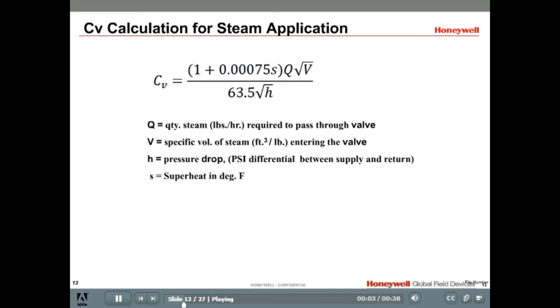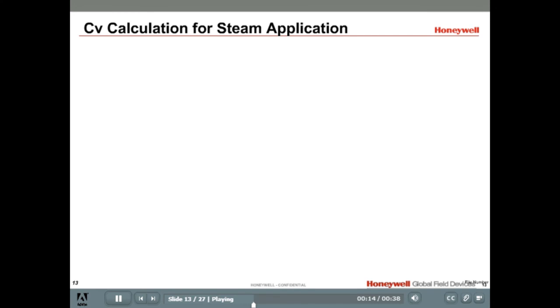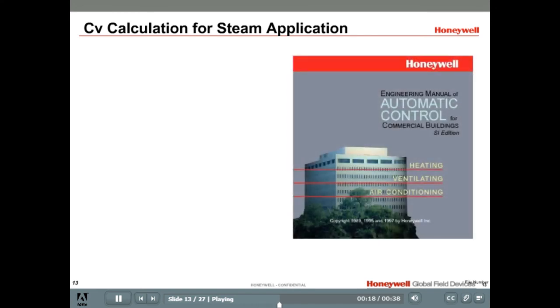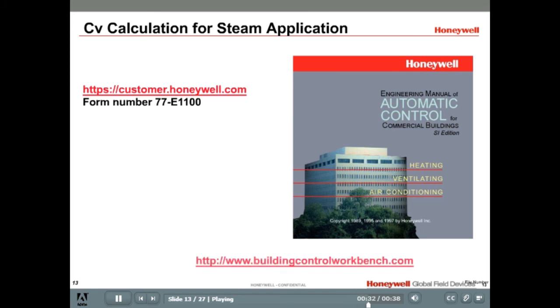To calculate the CV for a steam application, this equation is used. But often you may consult the building specs and replace the valve like for like. Still, it is good to verify that the valve is sized correctly for each application. An oversized valve may open only slightly resulting in cavitation and result in damage called wire draw. To learn how to size steam valves, consult the Honeywell Gray Manual. It is available at customer.honeywell.com, and in an interactive HTML format at buildingcontrolworkbench.com.